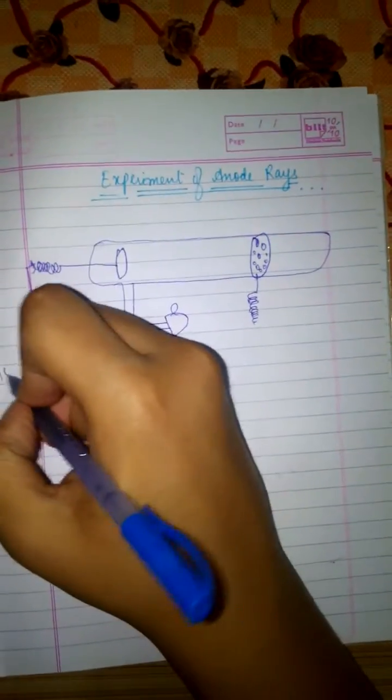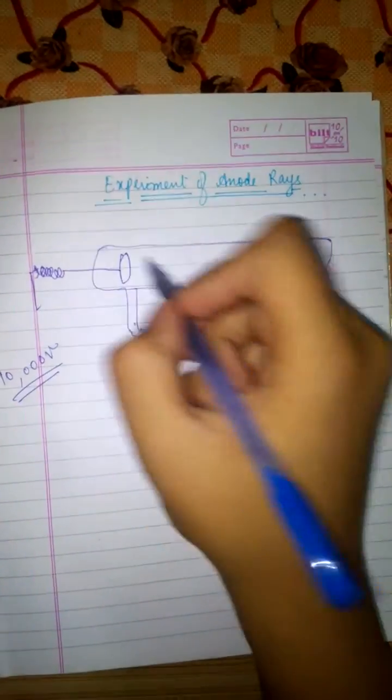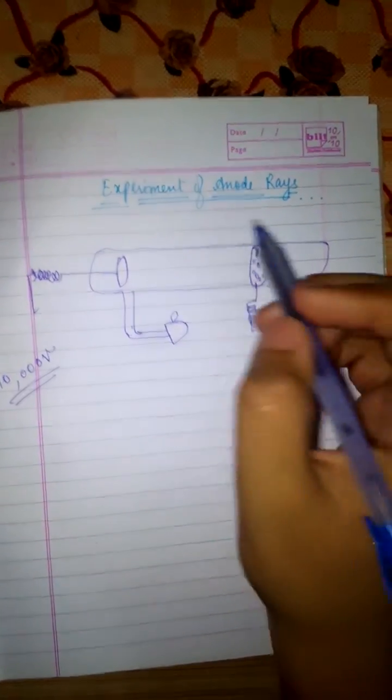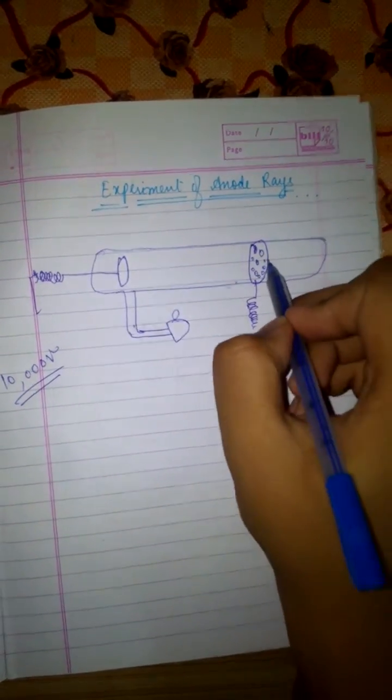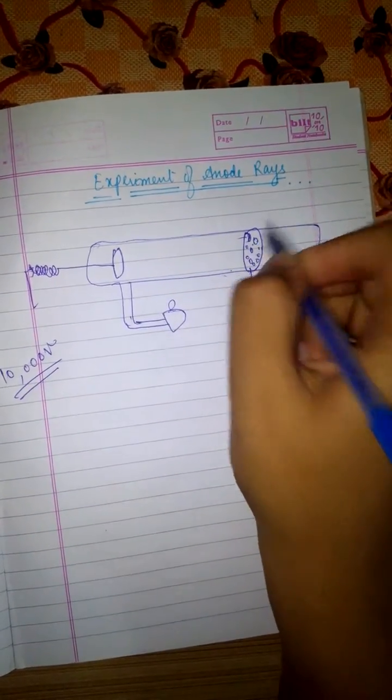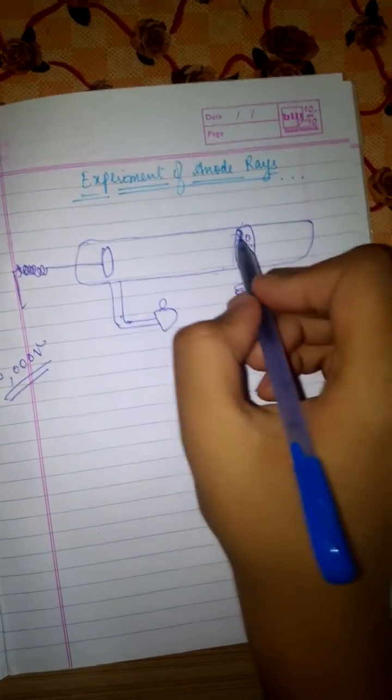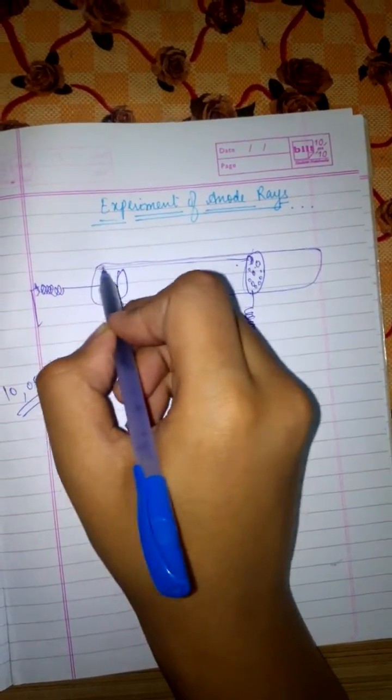So the concept was similar in this one as well. This is the cathode, so it would send cathode rays in this direction towards the anode.